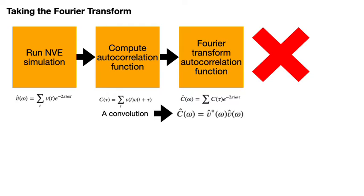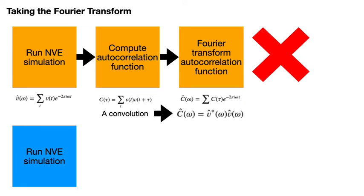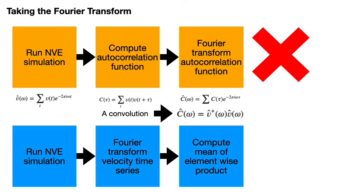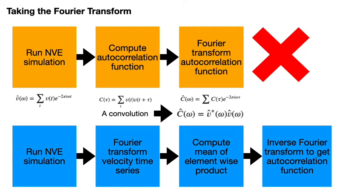In this formula we are using the Fourier transforms of the time series of velocities, and these are the only things that appear on the right-hand side of the expression. The procedure we will adopt to calculate the vibrational density of states — the Fourier transform of the autocorrelation function — is as follows. We will first run an NVE simulation, then Fourier transform the time series of velocities from that simulation, and then compute the mean of the element-wise product of those Fourier transforms to arrive at our final estimate for the vibrational density of states. Notice furthermore that if you ever need to compute the autocorrelation function again, an expert would follow these first three steps to compute the Fourier transform, and then get the final autocorrelation function by doing an inverse Fourier transform on the vibrational density of states.